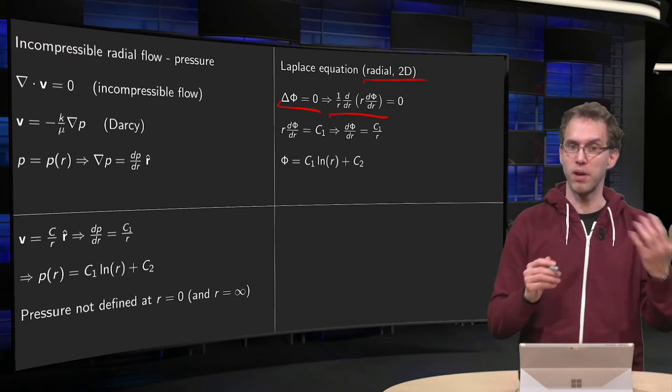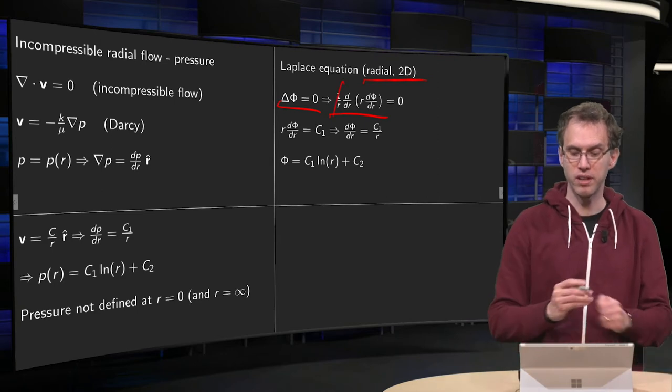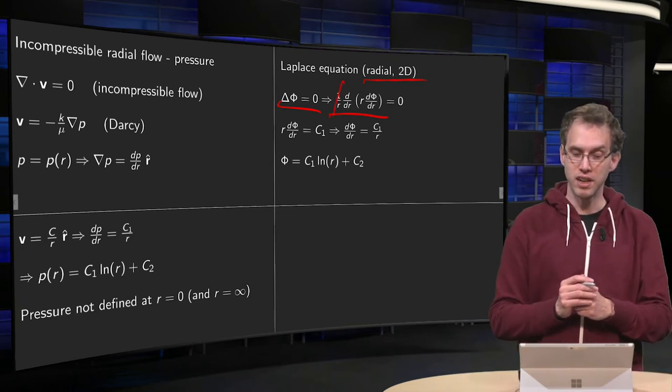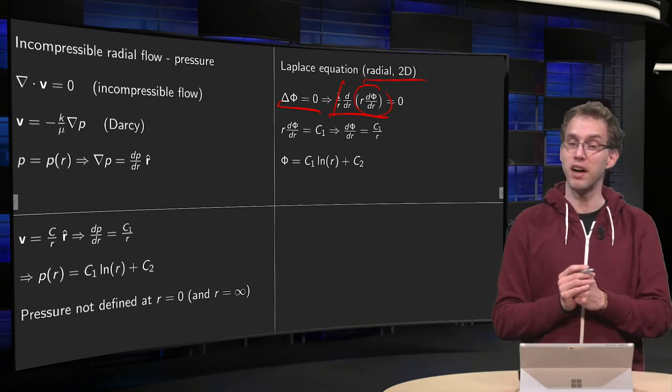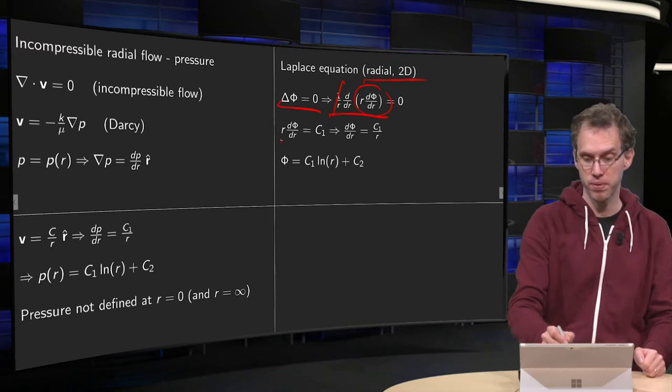And when you solve it, you can first multiply by r, so you get rid of this one, integrate once and you see that this r times d phi d r is some constant, c1 over here.